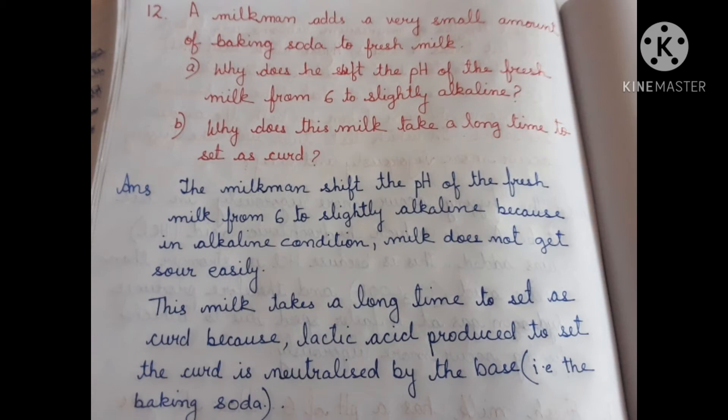Question 12: A milkman adds a small amount of baking soda to fresh milk. Why does this shift the pH from 6 to slightly alkaline? And why does this milk take a long time to set as curd? Answer: In alkaline conditions milk does not sour easily. It takes longer to set as curd because the lactic acid produced is neutralized by the baking soda.